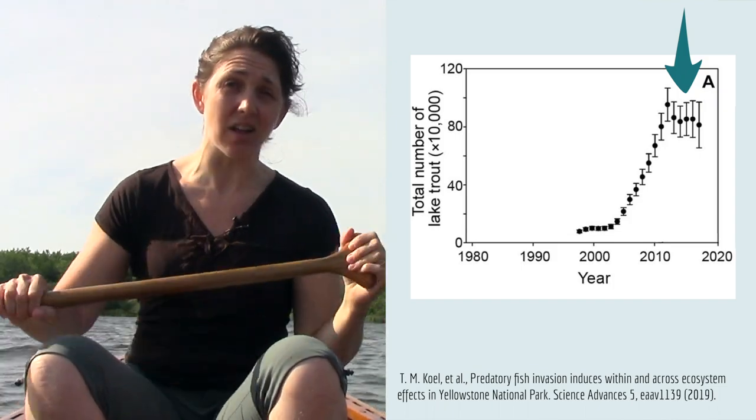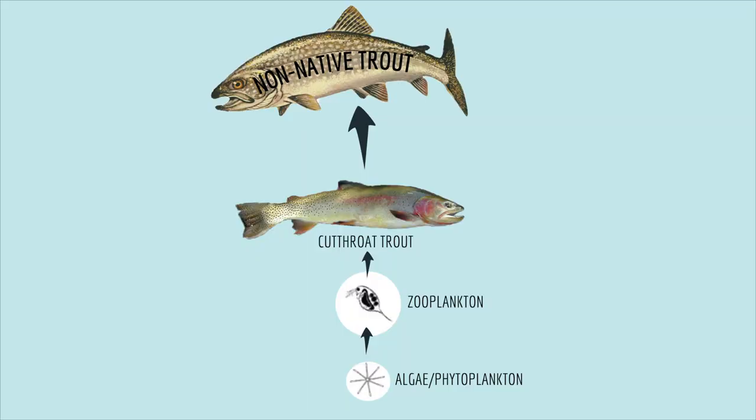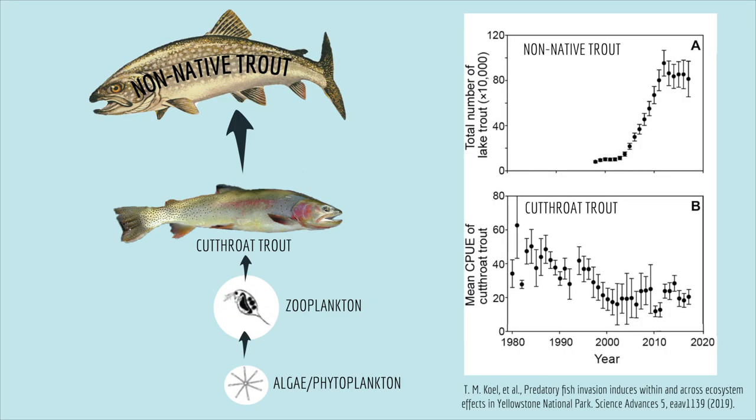Here's the deal: the non-native trout eat the native cutthroat trout. So as the number of non-native trout went up, the number of cutthroat trout went down, and that had several impacts on the ecosystem.